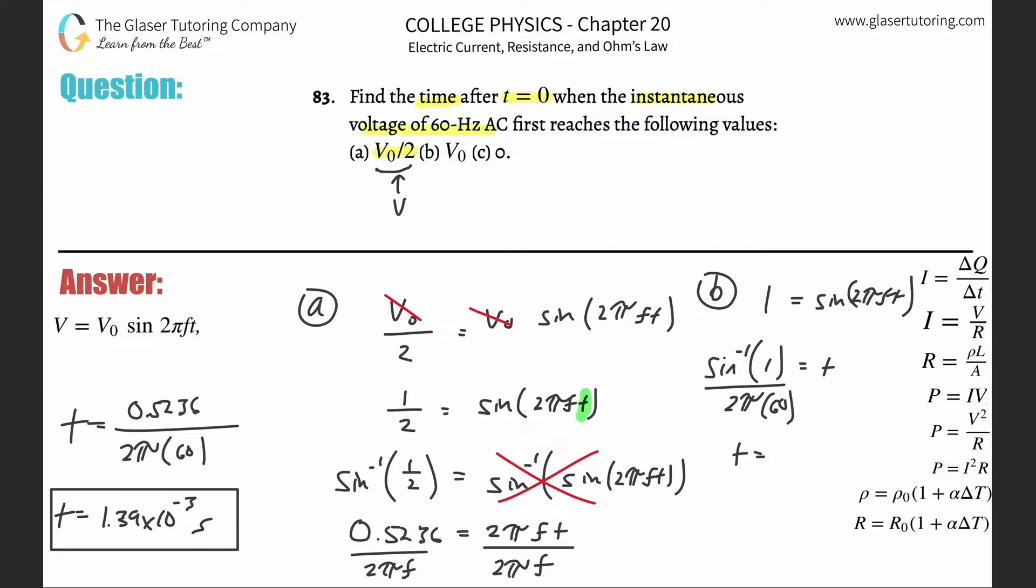And now just substitute instead of having F there, just substitute in the 60. And that's all you got to do to plug it into your calculator. So inverse sine of one divided then by parentheses two pi times 60. And here we're going to get a value of about 4.17 times 10 to the minus 3 seconds. Then when you get out there in the world and they actually do, nobody cares about sig figs.